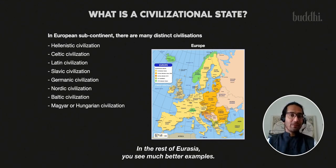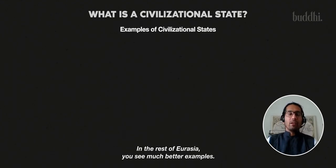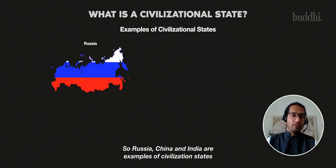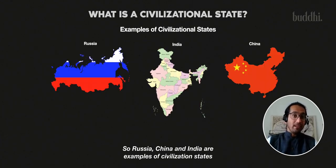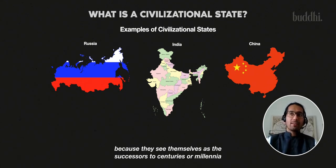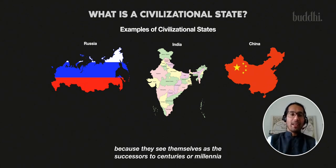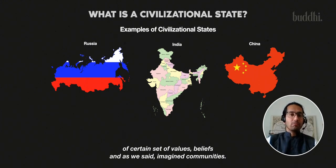In the rest of Eurasia, you see much better examples. Russia, China, and India are examples of civilizational states because they see themselves as the successors to centuries or millennia of a certain set of values, beliefs, and imagined communities.